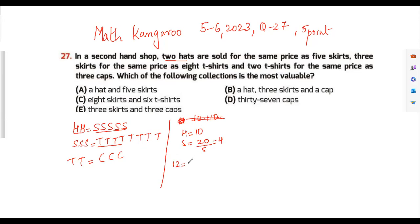You have eight t-shirts, so one t-shirt is 12 divided by 8, which is 3 over 2, which is 1.5. So one t-shirt is 1.5, and three caps is equal to 1.5 times 2, so which is 3. Therefore one cap is equal to 1. So these are your values.